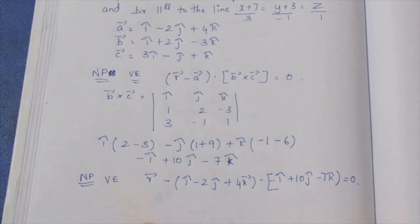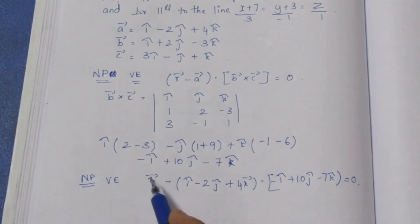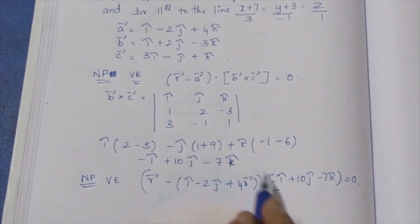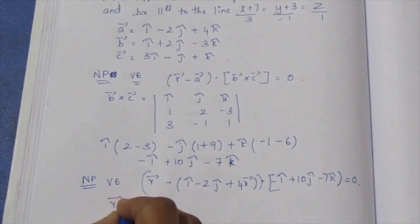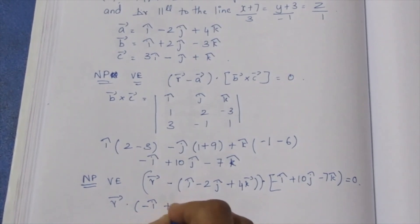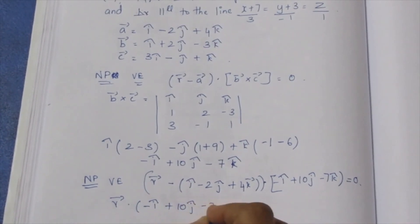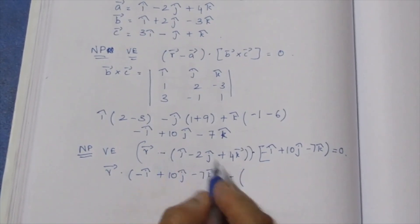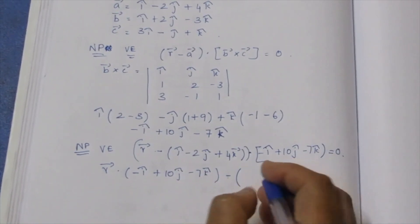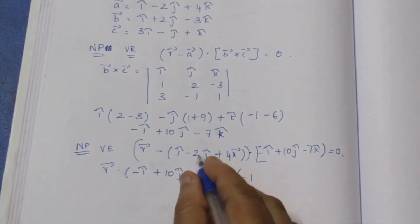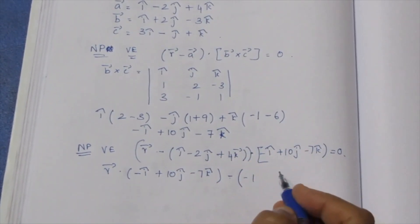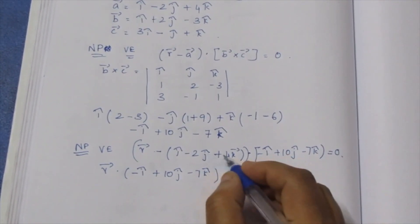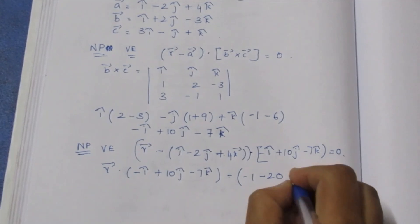Next is the Cartesian equation. Looking at the dot product, this is r-vector dot (-i-cap plus 10j-cap minus 7k-cap). Expanding the dot product: minus 1, then minus into plus minus, 20 multiply, minus into plus minus 7k-cap plus 28.